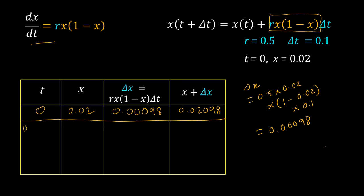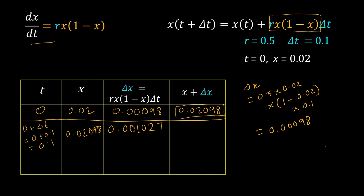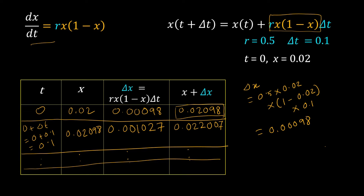In the next step, t will be 0 + delta_t = 0.1. The value of x here will be the previous x + delta_x. We have to again calculate delta_x for this new value of x. I have done the calculation — that is 0.001027. Summing x and delta_x gives 0.022007. This way you can keep calculating for different values of t until you reach the final time point, say t = 20, and you are done with the numerical solution.